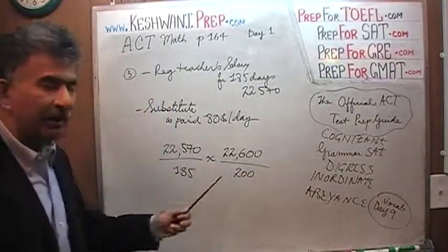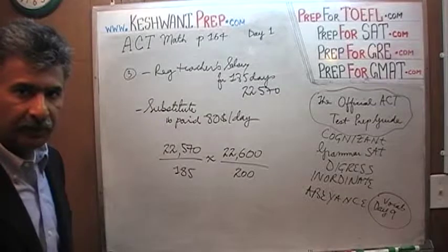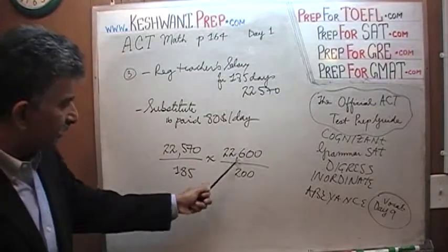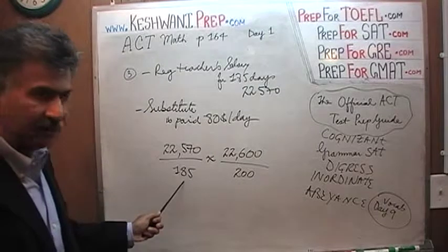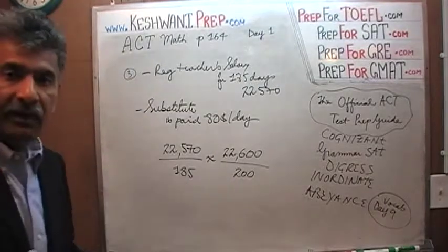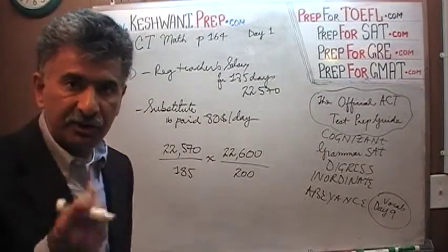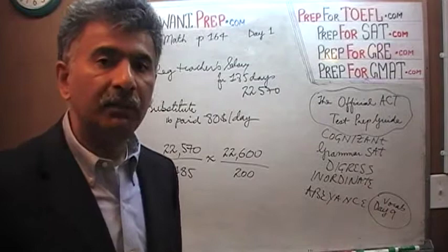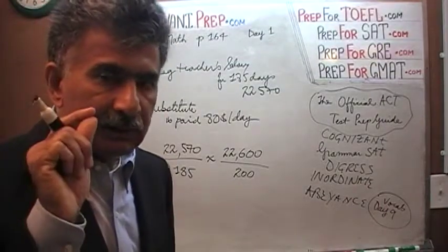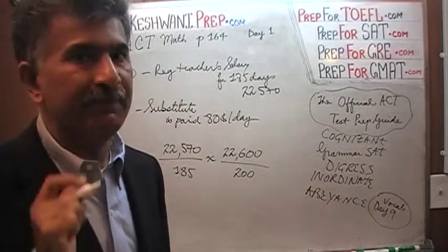Dividing 22,600 by 185 would have given a higher figure, but we're dividing by 200 — a larger denominator. Hence we are underestimating, and the correct answer will be slightly more than what we find here. That is the key difference between taking the exam smartly and taking it like a nerd.